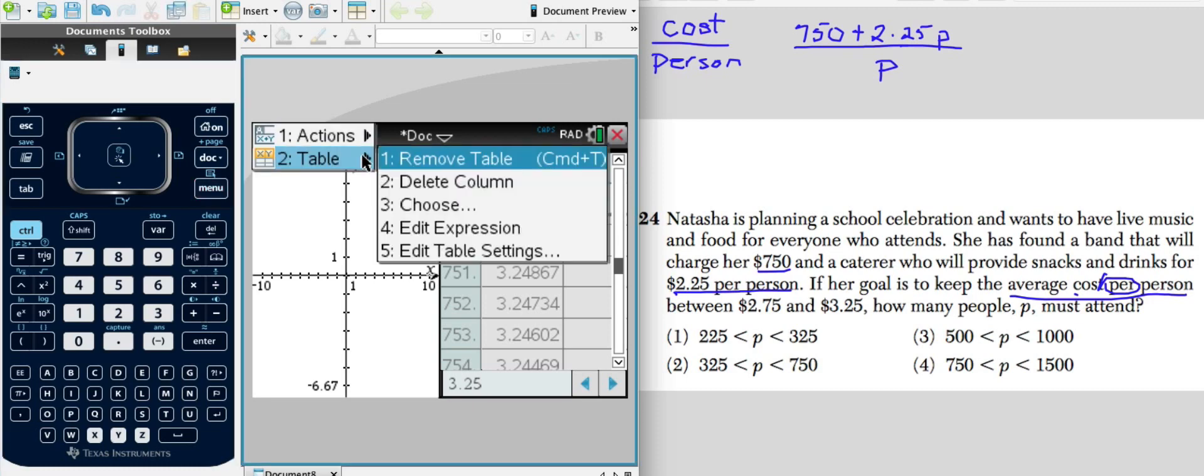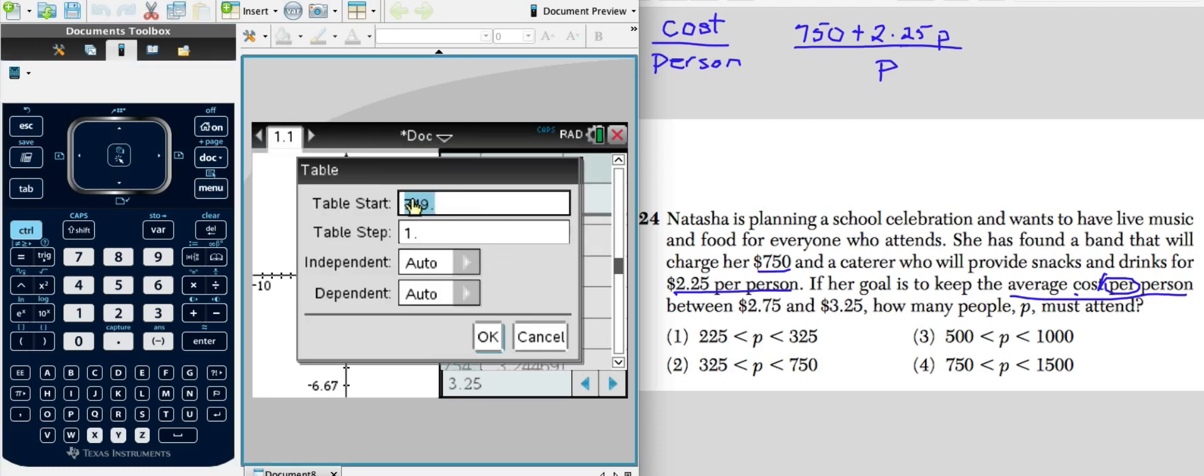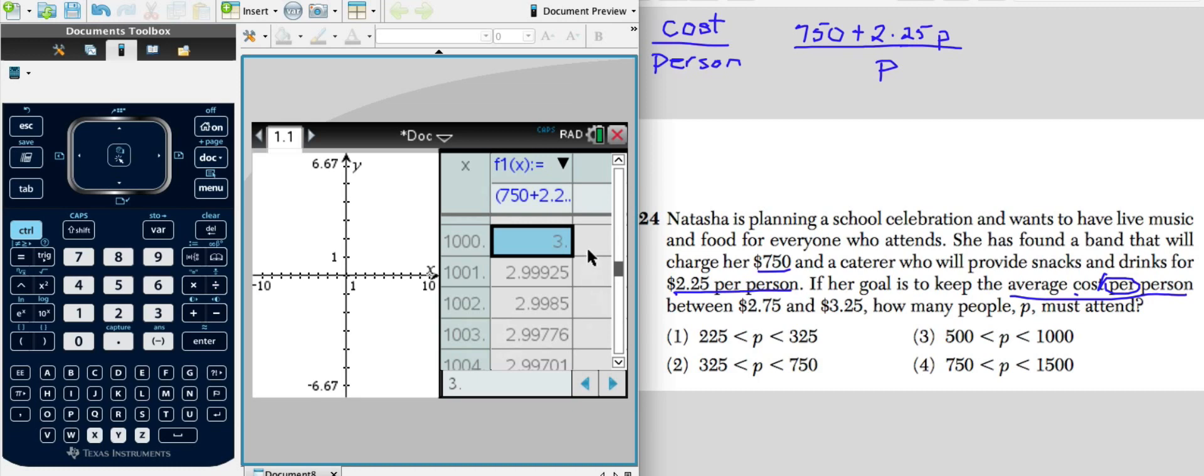So I go to menu, table, table settings, and I'm going to go to 999. And what do we have? Oh, I meant to go to 1,500. So we need to go up further.